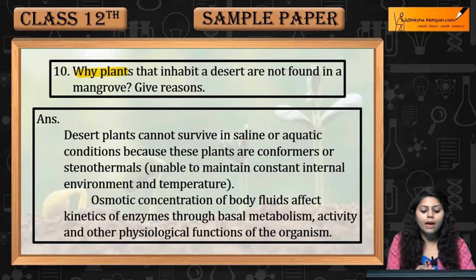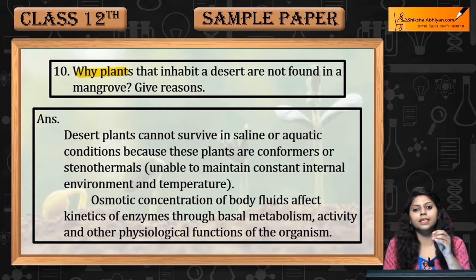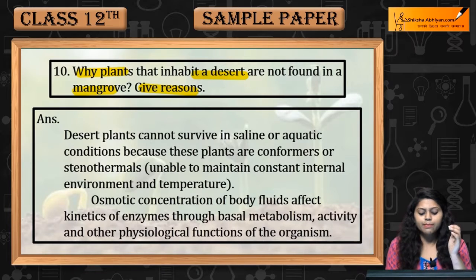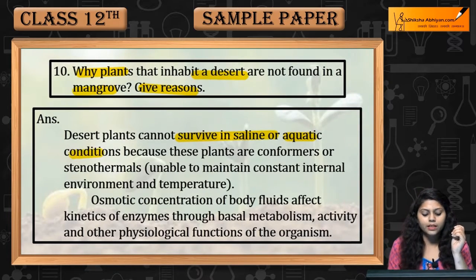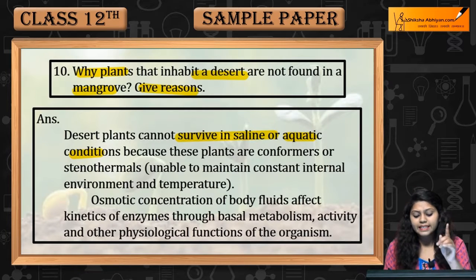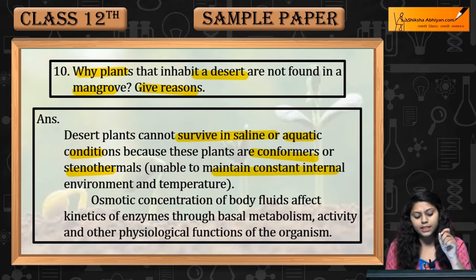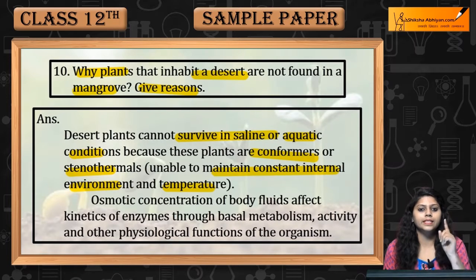Question 10: Why are plants that inhabit a desert not found in a mangrove? Desert plants cannot survive in saline or aquatic conditions because these plants are conformers — also called stenothermal — meaning they are unable to maintain a constant internal environment and temperature.